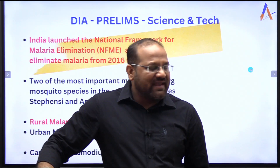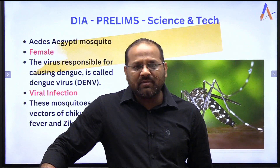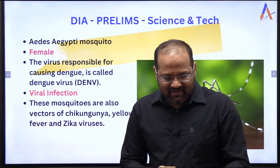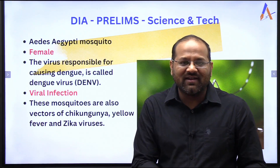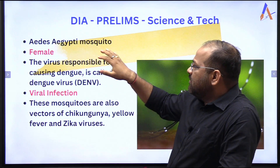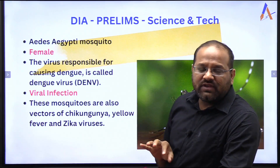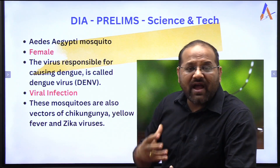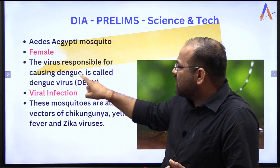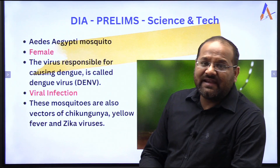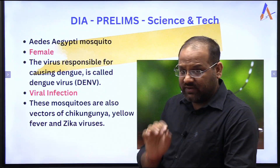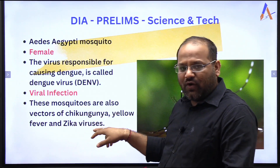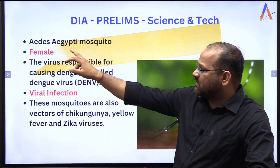We also had chikungunya as an option, so a little information about that. Dengue is spread by the Aedes aegypti mosquito — it is a female mosquito that bites in the daytime. Dengue is a viral infection, and the virus responsible is called the dengue virus, also known as DENV. These mosquitoes are also vectors of chikungunya, yellow fever, and Zika viruses.